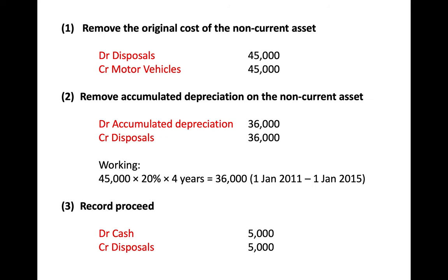The first step is to remove the original cost of the non-current asset. Motor vehicles is a debit balance in the SFP, so to remove a portion of cost from it you credit the motor vehicle account by the cost of £45,000. You then debit the disposal account, which goes to the P&L, by £45,000.